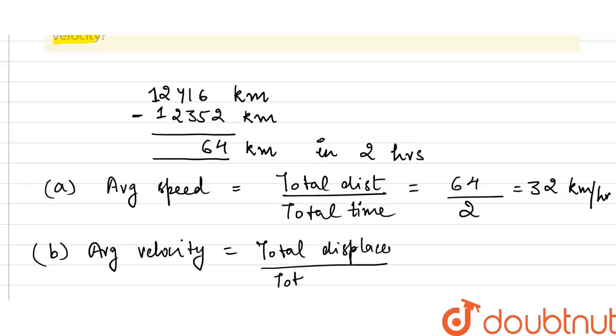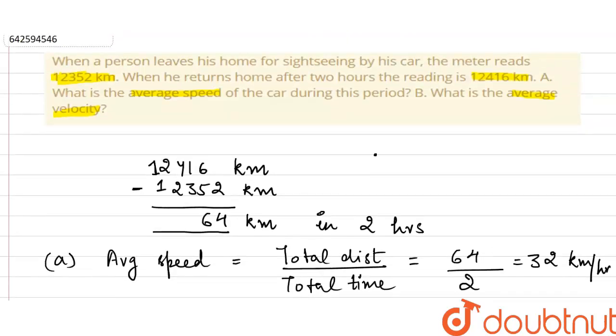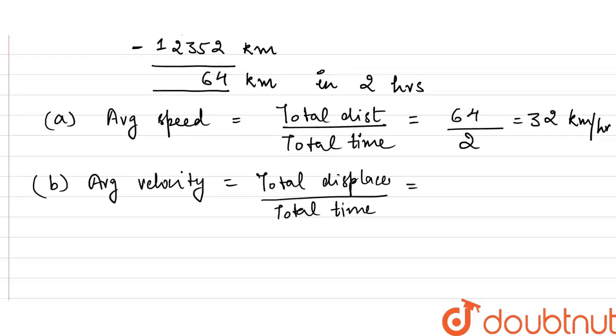So let's say that his home was at A and B is the place he went for sightseeing. Now, he returned to the same spot where he just started. So the displacement is zero.